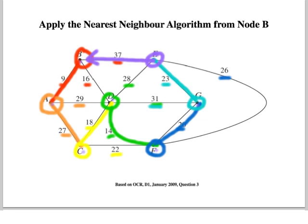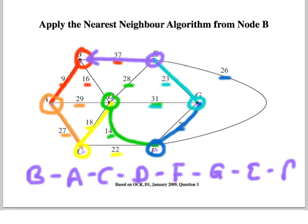Now the key thing is, we actually need to note down what the tour is and its weight. So we went B to A to C to D to F to G to E and back to B. And then we need to write down the weight, which just comes from the 9, the 27, the 18, the 14, the 20, the 23, and the 37. So we can write down the weight of the tour, which is 148. And that's a simple example of applying the nearest neighbour algorithm to solve the traveling salesperson problem.